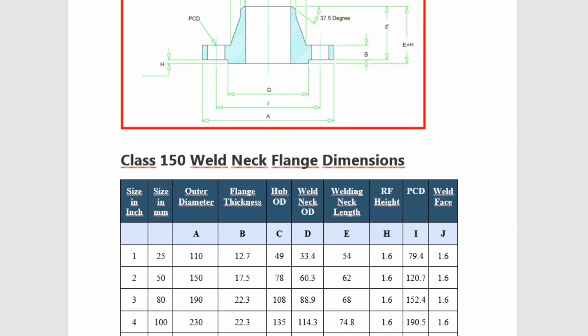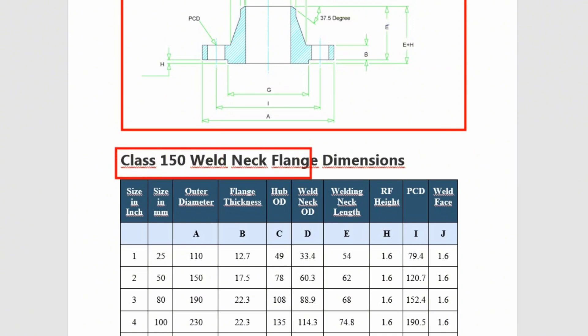This is a picture of the weld neck flange showing dimensions. This is a chart of the class 150 weld neck flange dimensions. The dimensions of the 4-inch weld neck flange we need are shown in this row. In this row shows that weld neck flange outside diameter is 114.3 millimeters.